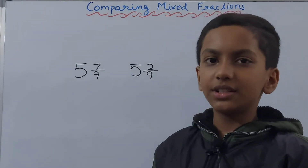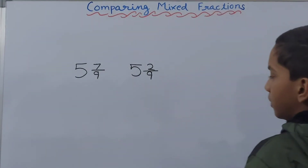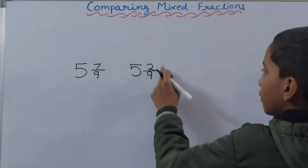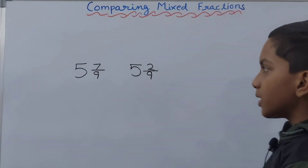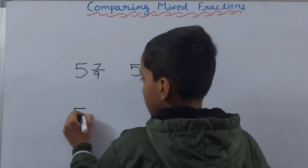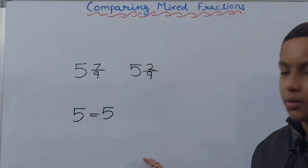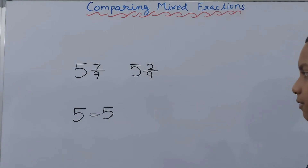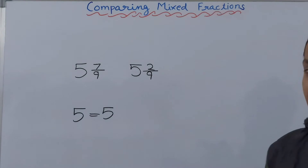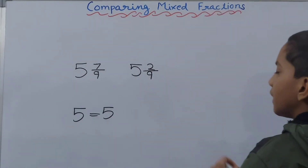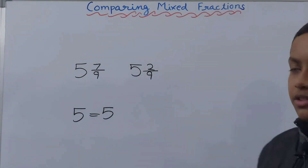Now let's look at two mixed fractions of a different type. This is five whole and seven upon nine, and this is five whole and two upon nine. Our first step is to compare the whole numbers, but here our whole numbers are equal — five and five. So in this case, when our whole numbers are equal, we are going to compare the proper fractions within the mixed fractions.